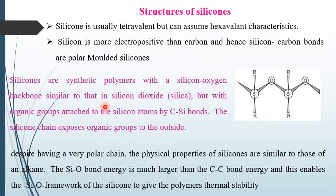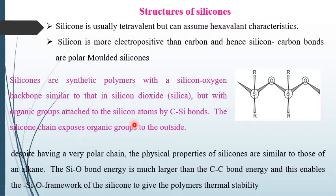The backbone is similar to that in silicon dioxide (silica, SiO₂), where the basic element compound is silica with silicon-oxygen bonds forming the main backbone. But with organic groups attached to the silicon atoms by carbon-silicon bonds, silicon-oxygen bonds can be found alongside silicon-carbon bonds.